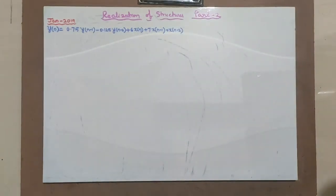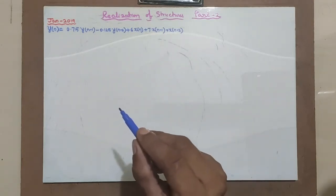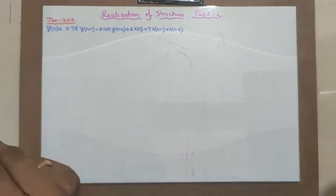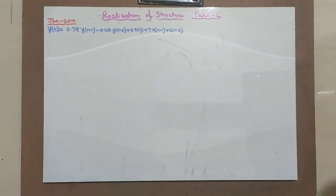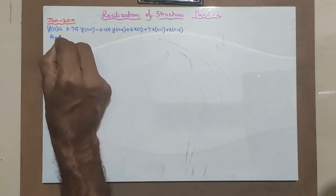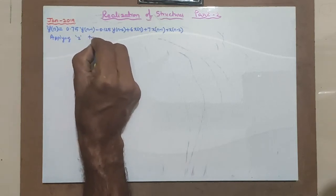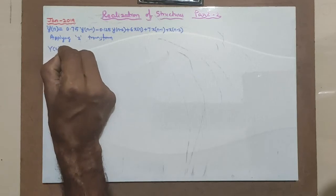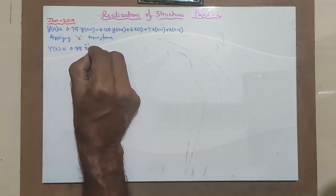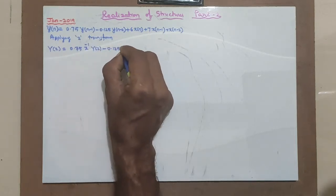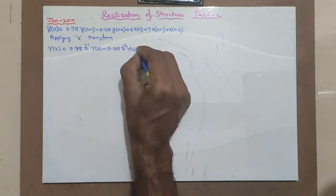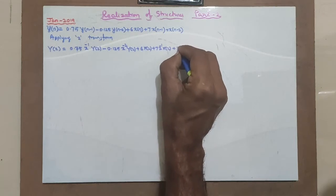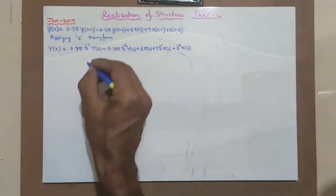If you notice from the previous example where H of Z was given directly and you had found the different structures, but here Y of N is given. When a difference equation or Y of N is given, the first step is to find H of Z. Hence, applying Z transform, I take Y of Z equal to 0.75 Z raised to minus 1 times Y of Z minus 0.125 Z raised to minus 2 times Y of Z plus 6 X of Z plus 7 Z raised to minus 1 times X of Z plus Z raised to minus 2 times X of Z. I have taken all things into Z domain.